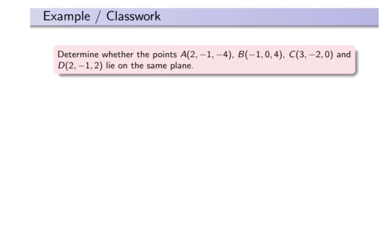First of all, if we are given only three points, then they must lie on the same plane. It's because either they all lie on the same line, or they form a triangle, which is a planar object. So the issue here is whether the fourth point also lies on the same plane as the first three points or not.